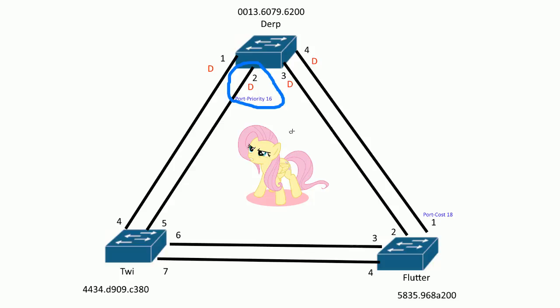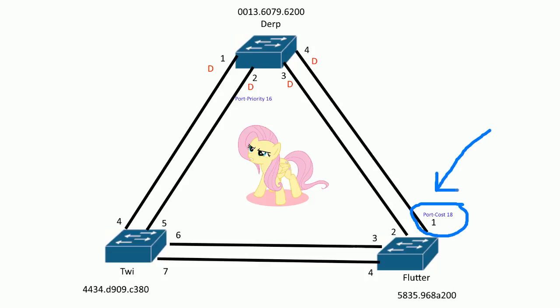Port priority defaults to 128, but I manually changed it to 16 just to see what would happen. Then port 1 here — by default it would add a cost of 19 because this link negotiated as Fast Ethernet — everything is Fast Ethernet. But I rigged the system and made the cost 18 on that port. That changed a lot of things dramatically in this topology, even though it's the same setup as the first video with just these two changes.